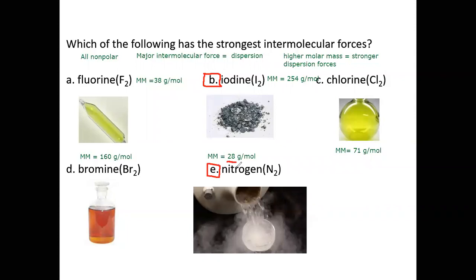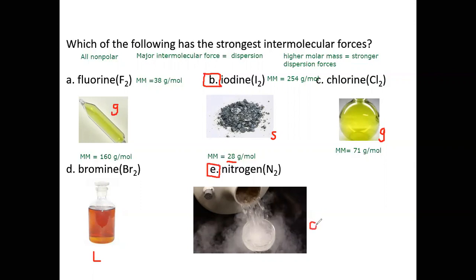Another way you can look at this question is by looking at the physical states of the different substances. Fluorine at room temperature is a gas — a greenish-looking gas. Iodine at room temperature exists as a solid. Chlorine at room temperature exists as a gas, that's why it's in a flask. Bromine at room temperature exists as a liquid. Nitrogen — what you see is liquid nitrogen coming out of a container; as soon as it comes out, it vaporizes and forms gas.